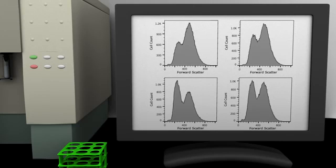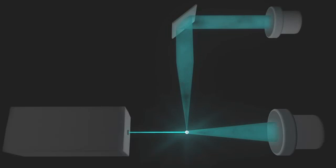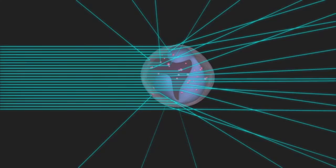The amount of side scattered light is detected by a detector located perpendicular to the path of the laser beam. Side scatter is proportional to the shape and internal complexity of a cell.